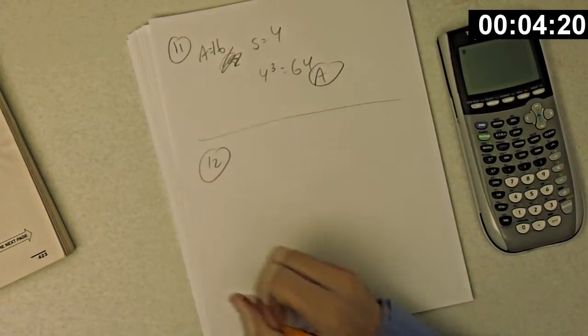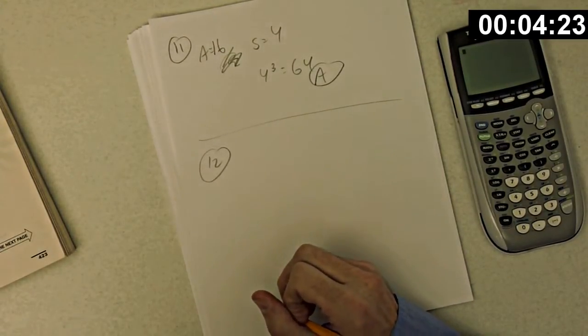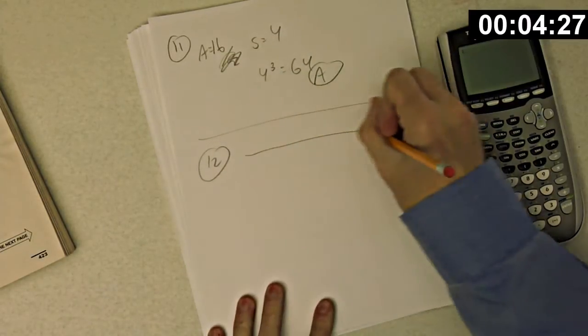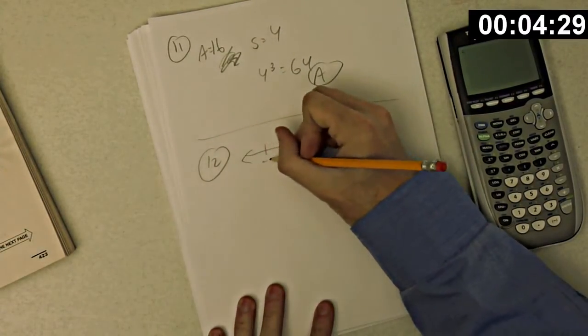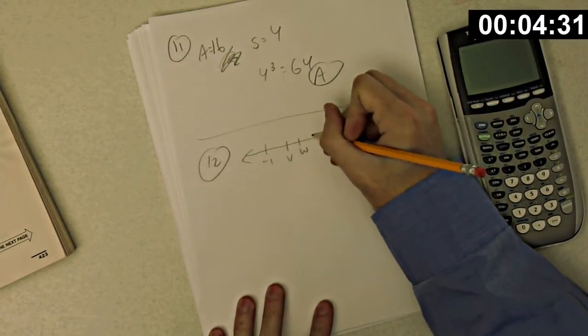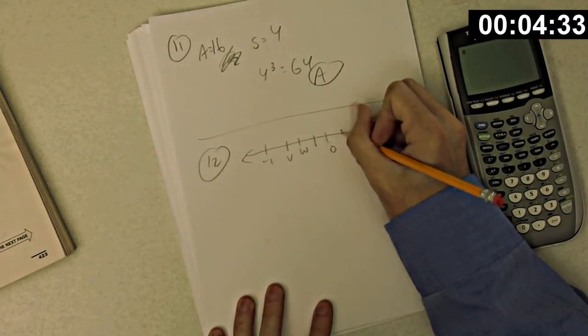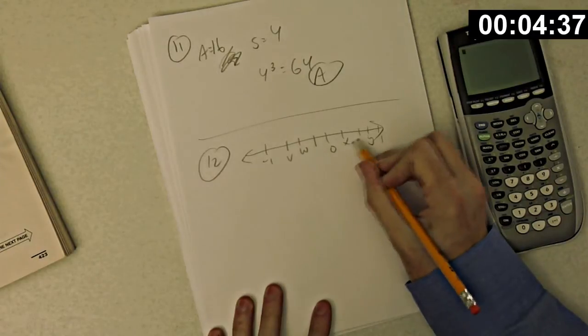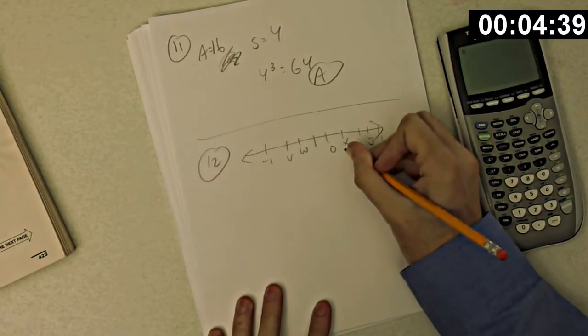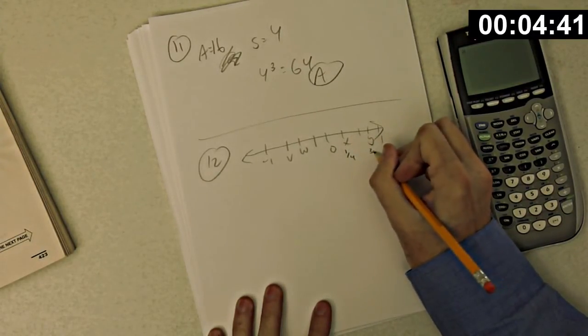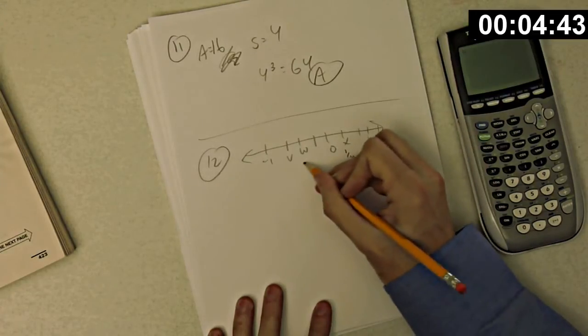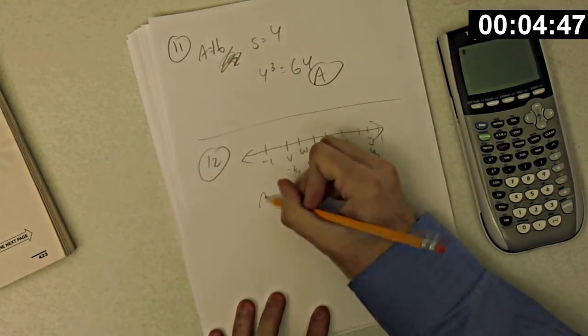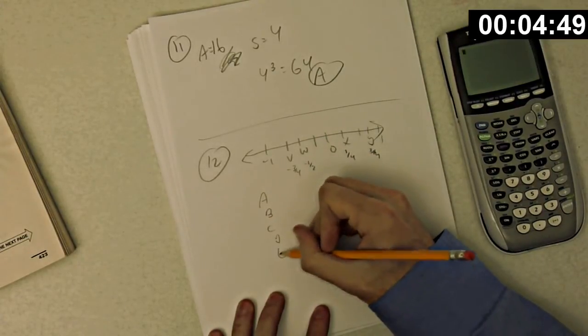Okay, number 12. The letters V, W, X, and Y represent numbers as shown on the number line above. Which of the following has the least value? I'm just going to do this the long way and compute it. 0, let's see, x, y, 1. So let's see. 1, 2, 3, 1, 2, 3, 4. So this is 1/4. That's 3/4. This is negative 1 1/2 and negative 3/4. So let's compute all of these. A, B, C, D, E.